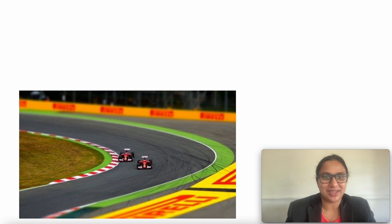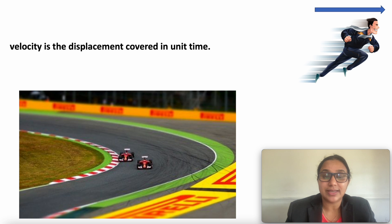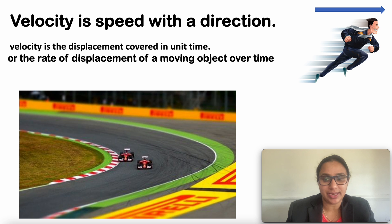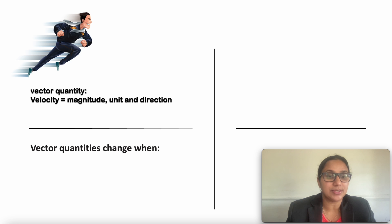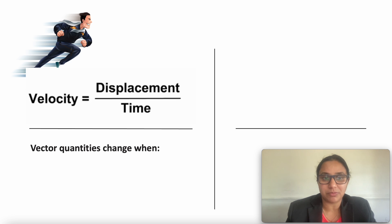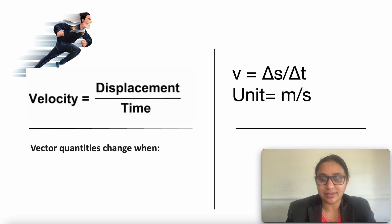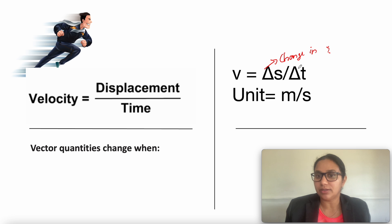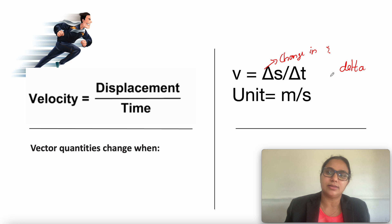So we have discussed speed. But what is velocity? When speed has direction, we call that quantity velocity. Velocity is nothing but displacement covered in unit time, or the rate of change of displacement. Velocity is a vector quantity — it has magnitude, unit, and direction. The velocity formula is displacement divided by time, written as ΔS divided by ΔT, where delta represents change in a quantity. So it is change in displacement over change in time, denoted by the Greek letter delta. The unit is meters per second, same as speed.